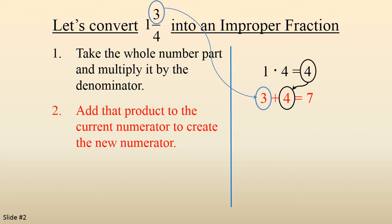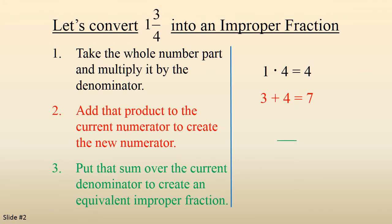So 7 becomes the new numerator. We put that sum, the 7, over the current denominator to create an equivalent improper fraction, 7 fourths. So 1 and 3 fourths becomes 7 fourths. We've gone from a mixed number to improper fraction.